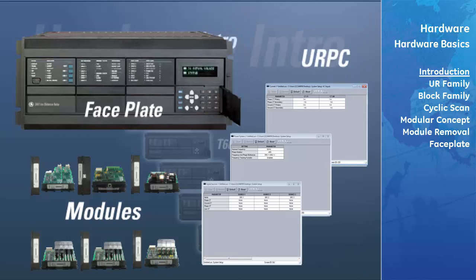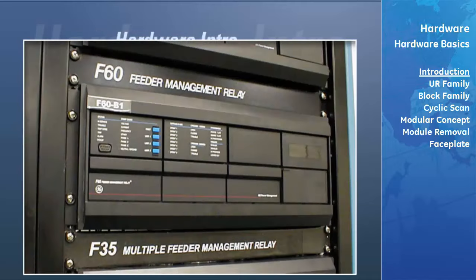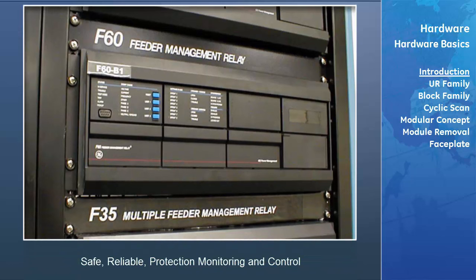Each individual UR device is distinguished by the user-defined faceplate LED panels, specialized function modules, and device-specific firmware programs. The UR is a microprocessor-based relay designed for power substation control and monitoring using a platform approach. Known as the Engine for Substation Automation, the UR provides safe and reliable protection, monitoring, and control of power systems.